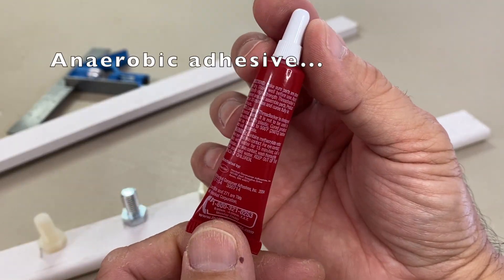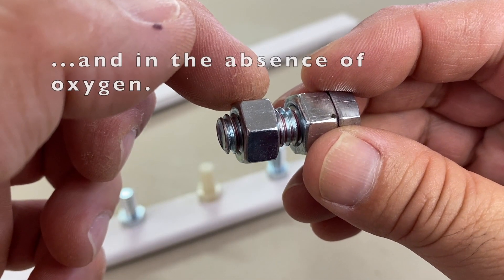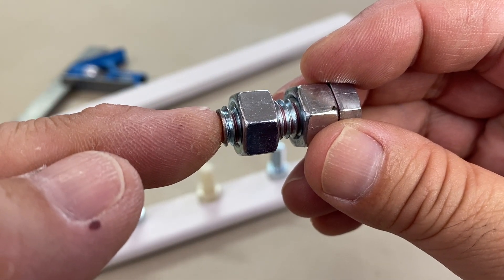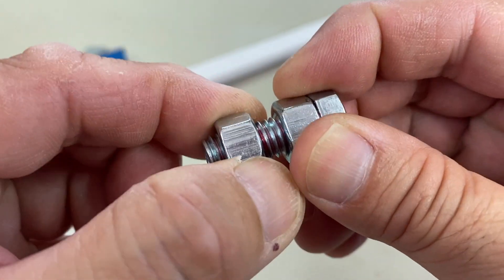Threadlockers are anaerobic adhesives that cure in contact with metal and in the absence of oxygen, like between this nut and bolt, and once cured, bonds the nut and bolt together. Back to the experiment.